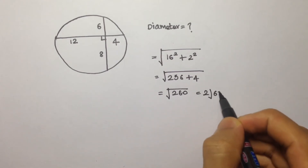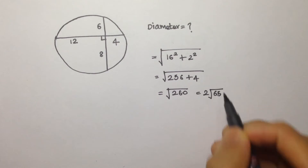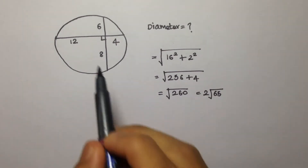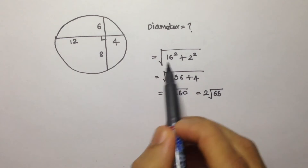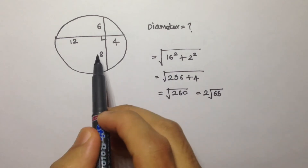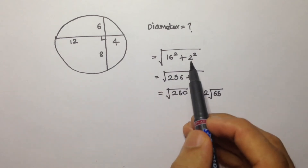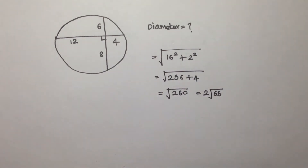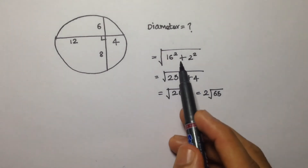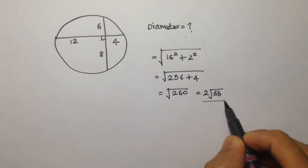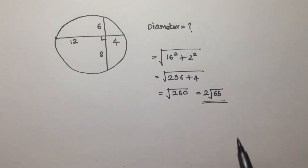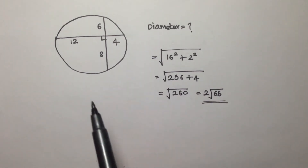So the diameter is root of 260, which we can write as 2 root 65. The method is: take the sum of one pair of segments, take the difference of the other pair, find the sum of their squares, and take the square root — that gives the diameter.